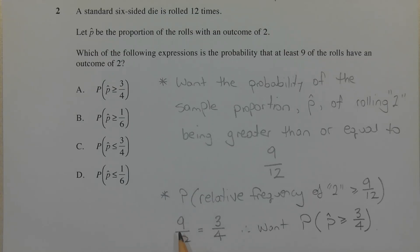Now 9 out of 12 simplifies to 3 out of 4. So we want the probability that the sample proportion P hat is greater than or equal to 3 out of 4. Therefore the correct answer is option A.